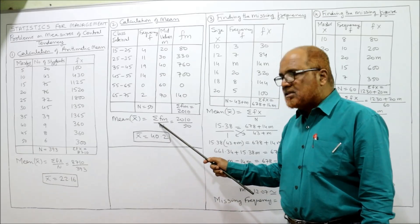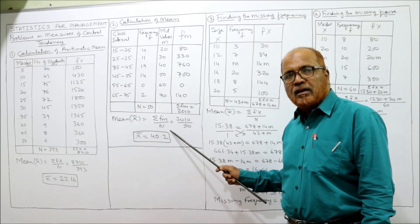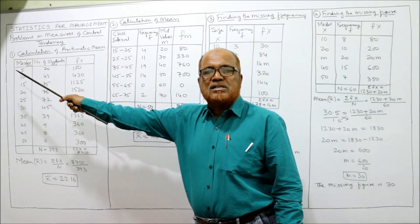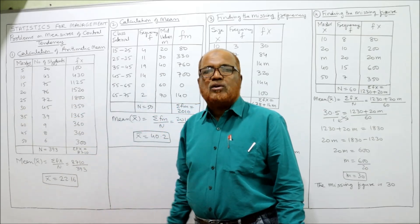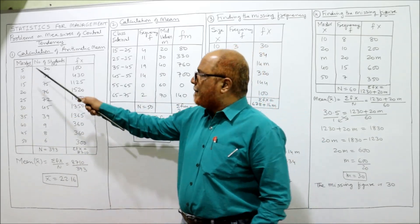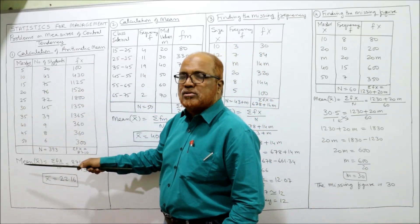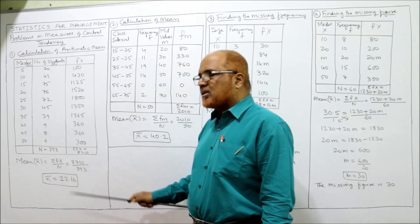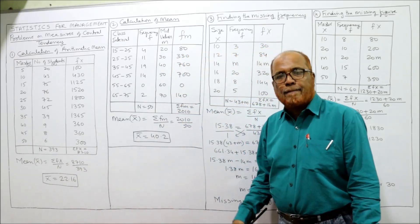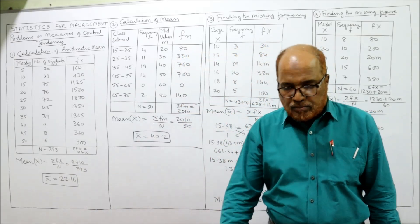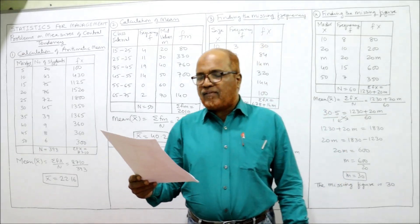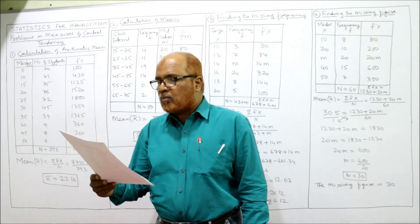So to summarize the formula distinction: if class intervals are given (continuous series), use Mean = ΣFM / N. If discrete values (separate X values) are given, use Mean = ΣFX / N. Now the third problem: 'From the following data, find the missing frequency when the mean is 15.38.'